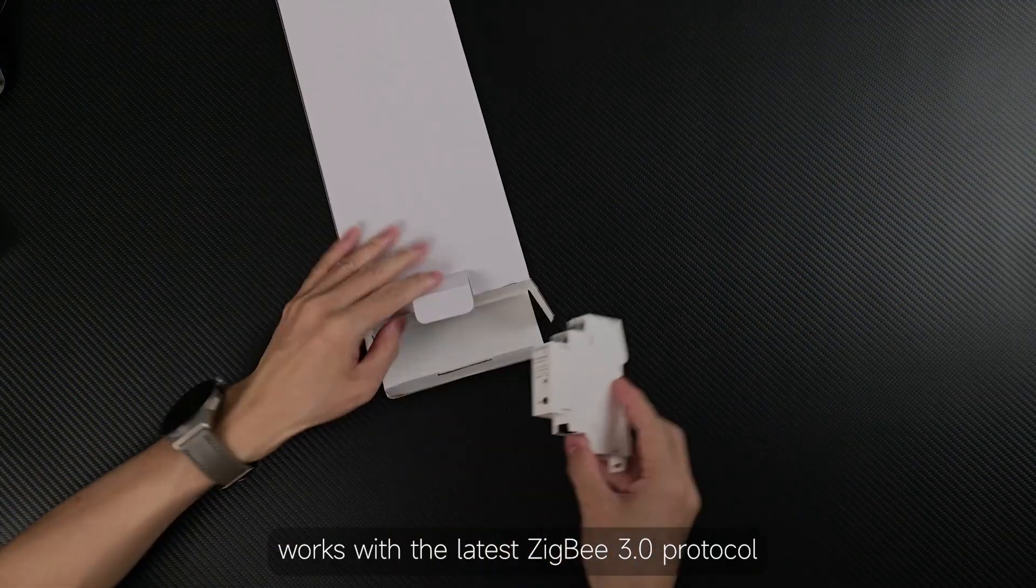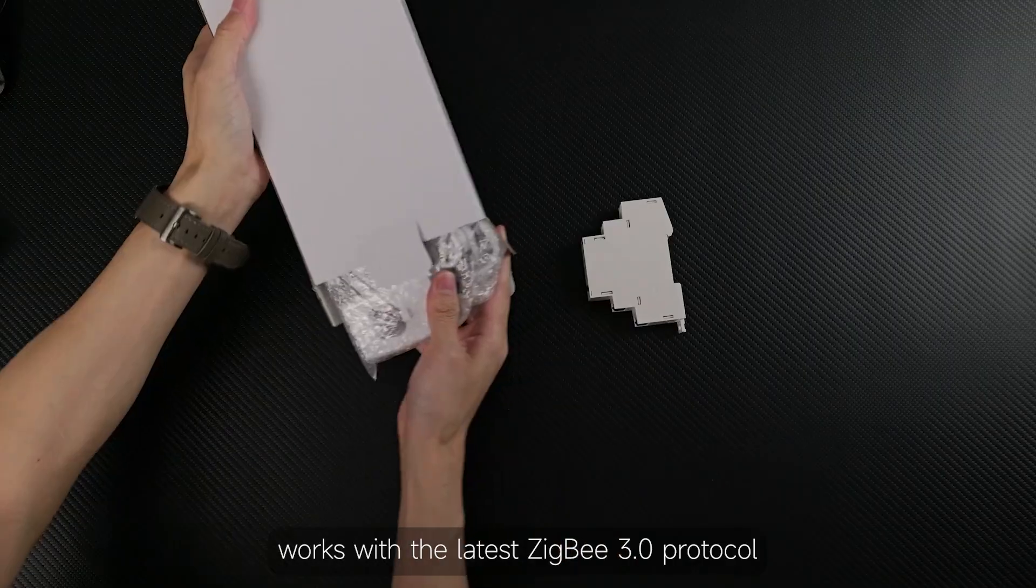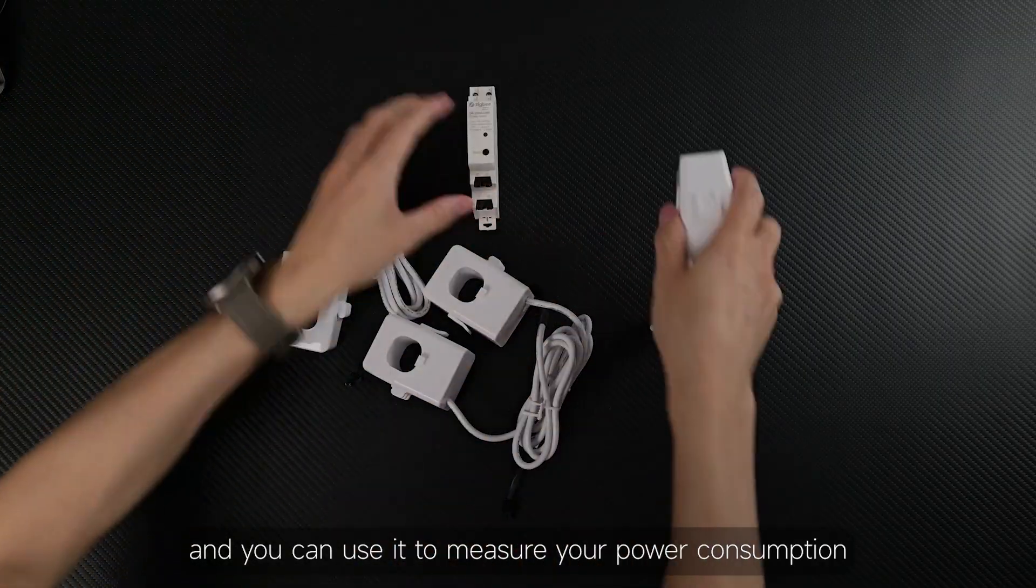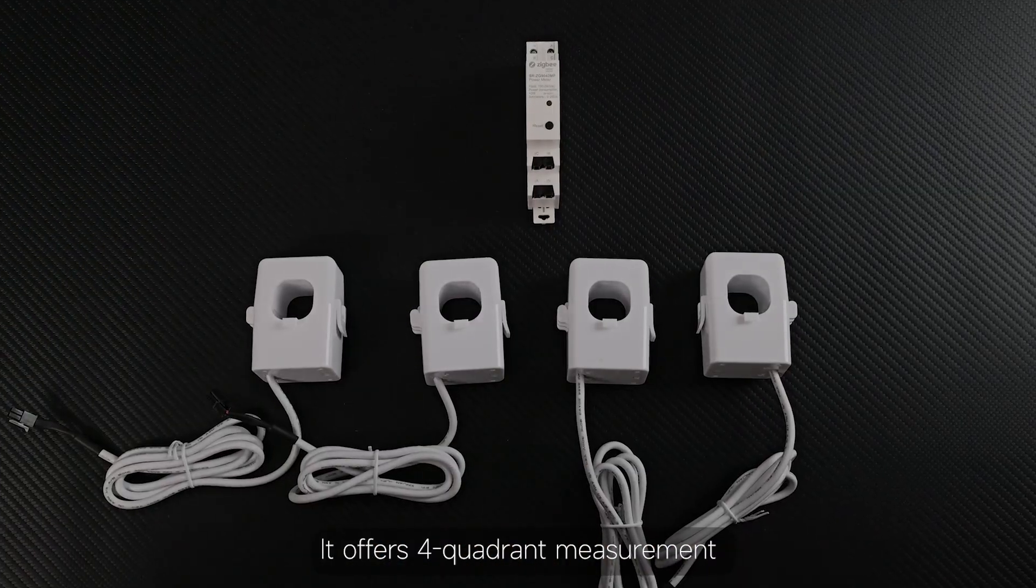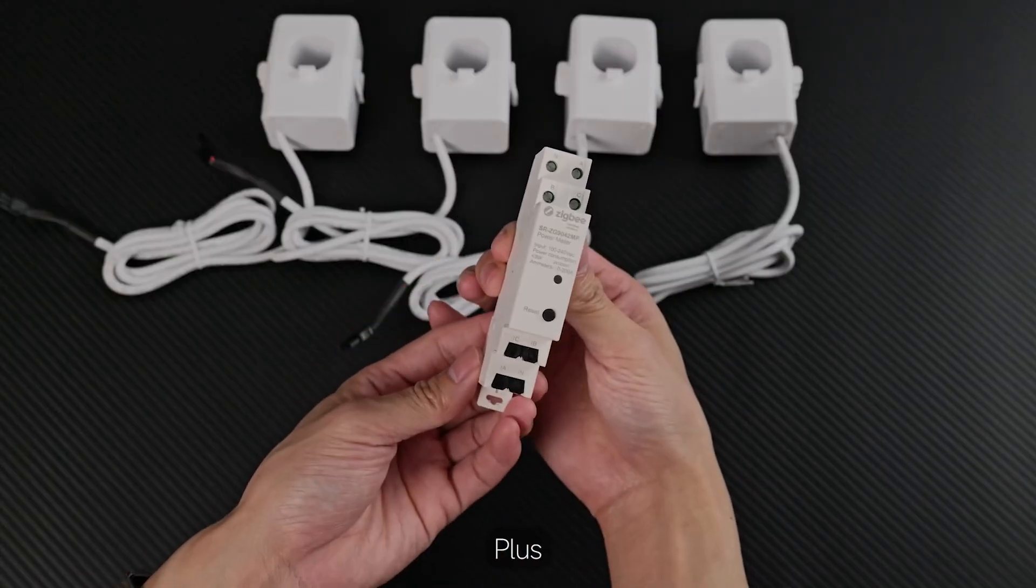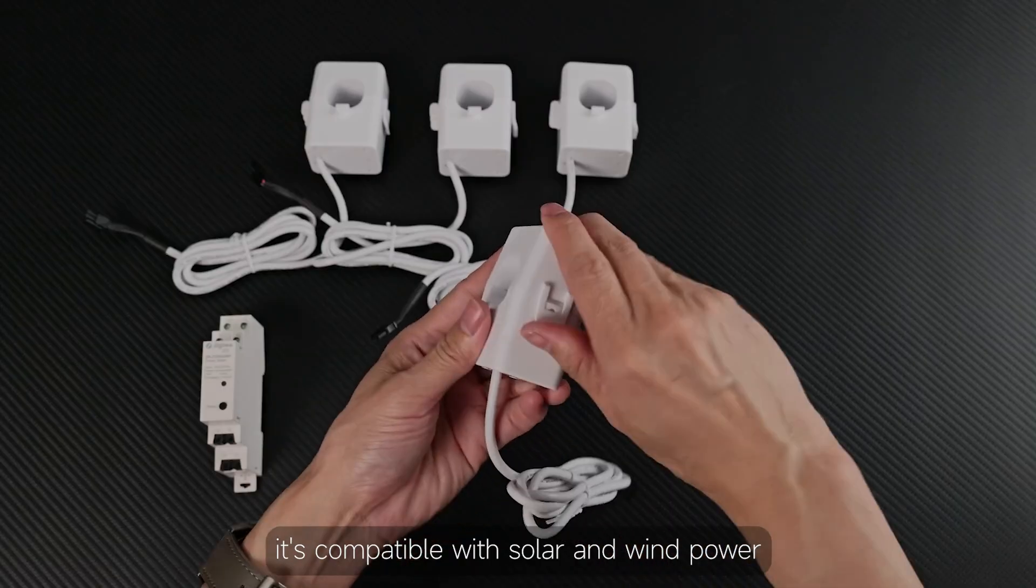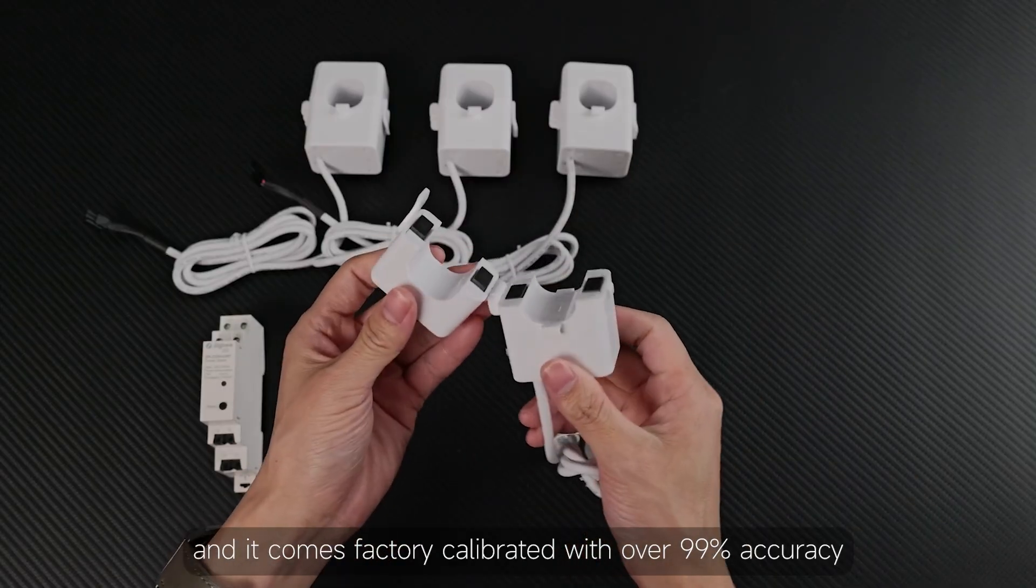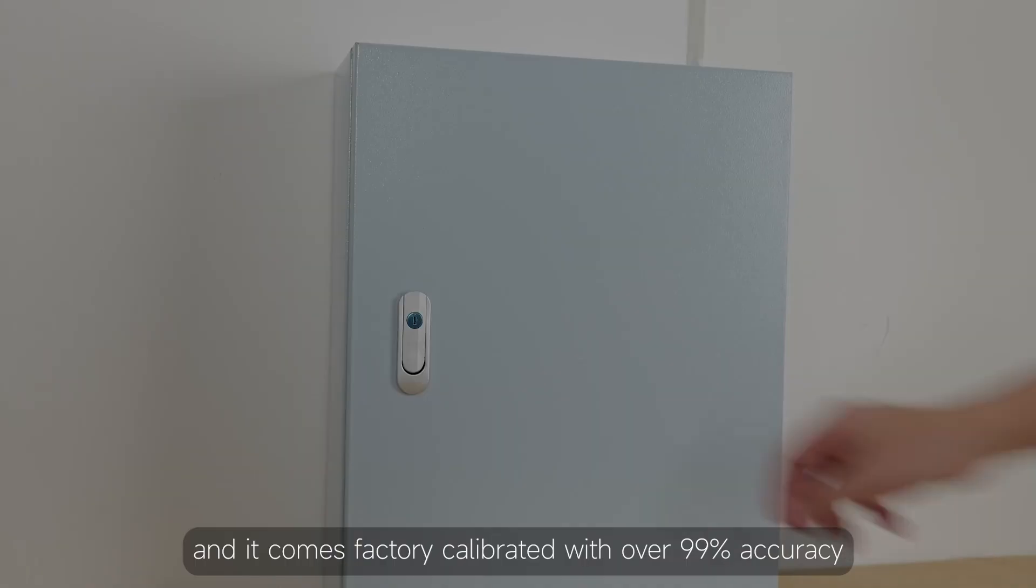This energy meter works with the latest Zigbee 3.0 protocol and you can use it to measure your power consumption. It offers four quadrant measurement and can handle up to 200 amps per phase. Plus it's compatible with solar and wind power and it comes factory calibrated with over 99% accuracy.